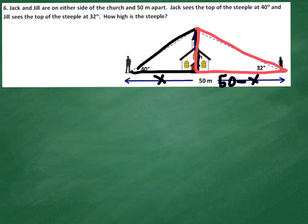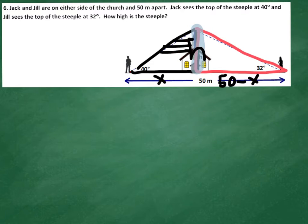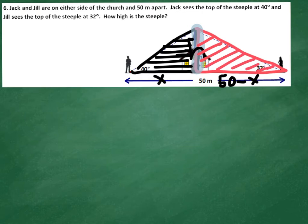Once you label that, the other thing that's really important is this height h, which is common to both of the triangles. What's going to happen is you'll get an equation dealing with this triangle with an h in it, and you'll set up an equation with the other triangle that also has an h in it. Because h is physically the same for both triangles, you can equate them and then solve.